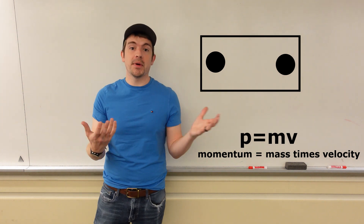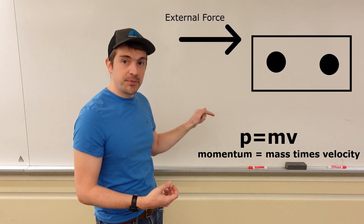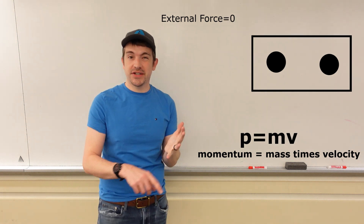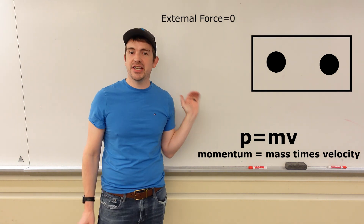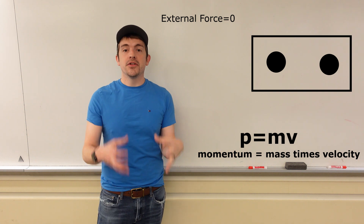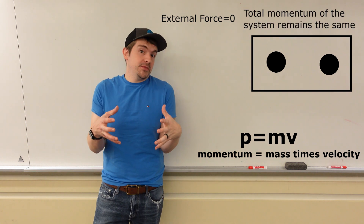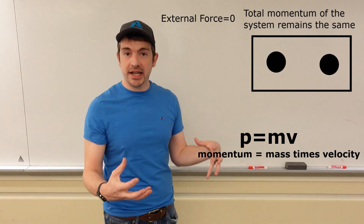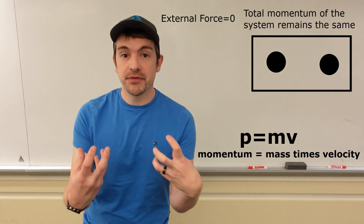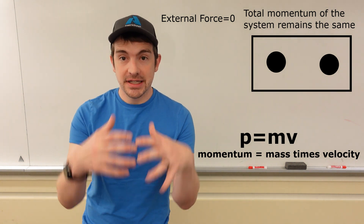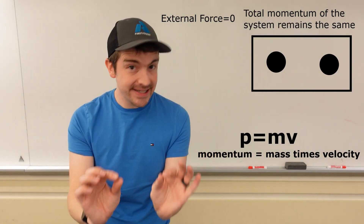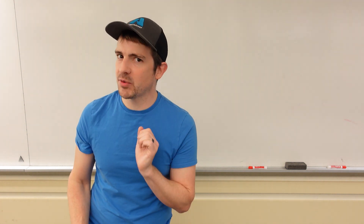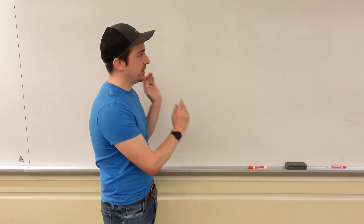Momentum itself is mass — which is how much stuff there is — times velocity. Mass times velocity is momentum. If a system doesn't have any outside external forces like air resistance or friction, then the system's momentum is conserved. The basic idea behind a rocket is that the entire momentum of the rocket and the fuel together as a system is zero.